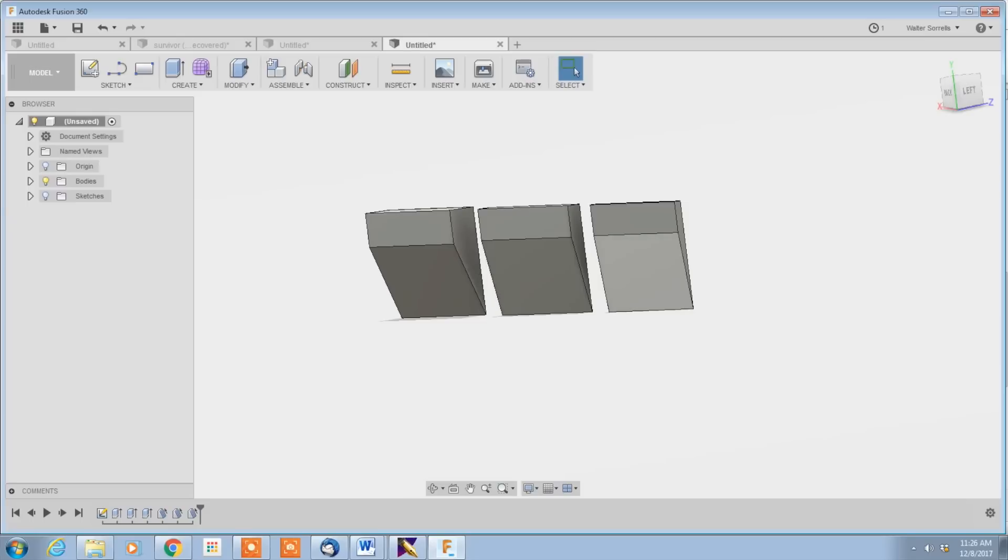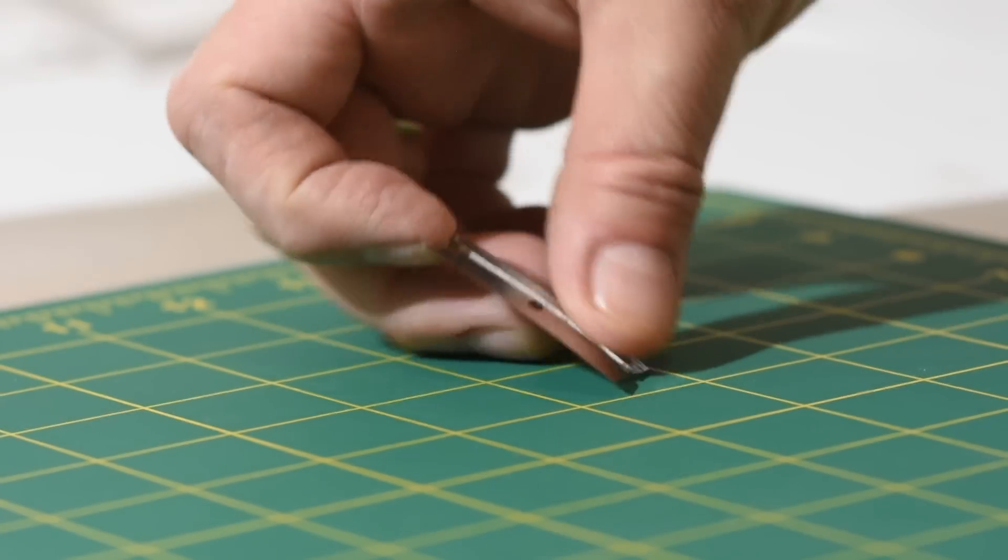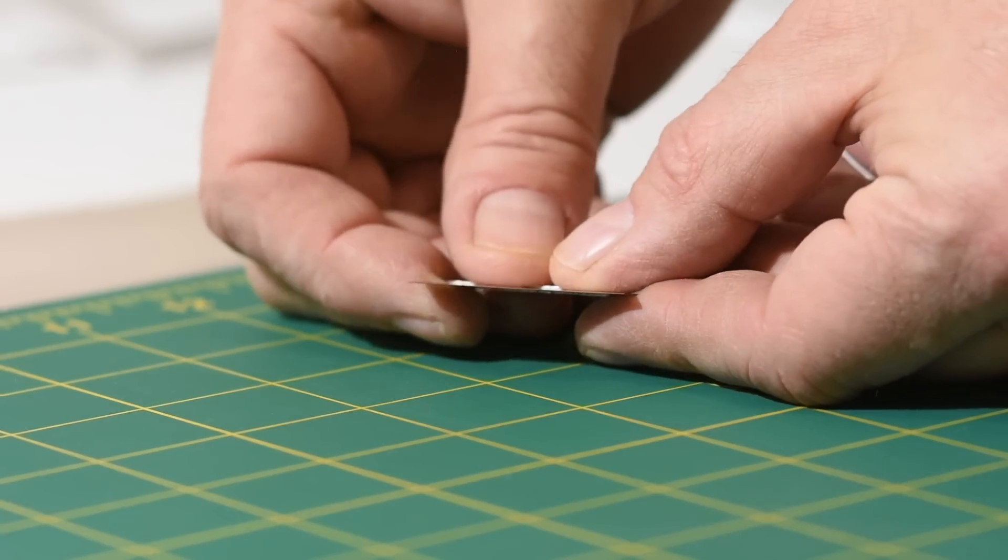The more material we remove from the blade, the weaker it gets. This has several implications. The most catastrophic of which is that a weak blade can break in half if you stress it. For instance, I could break this razor blade with my fingers.